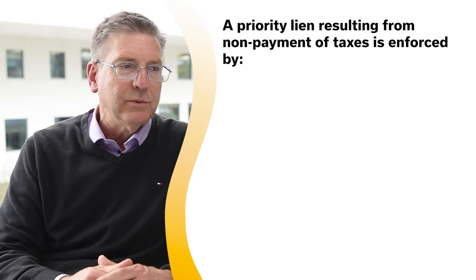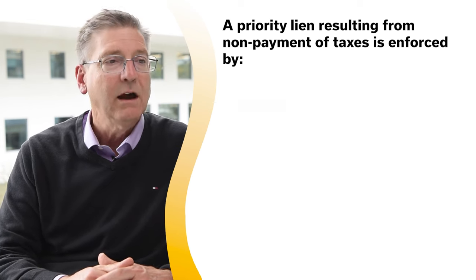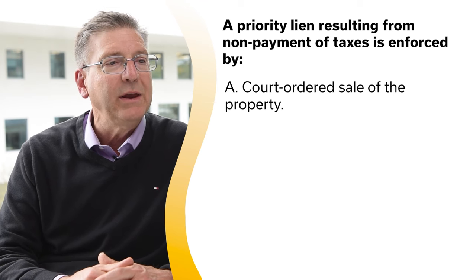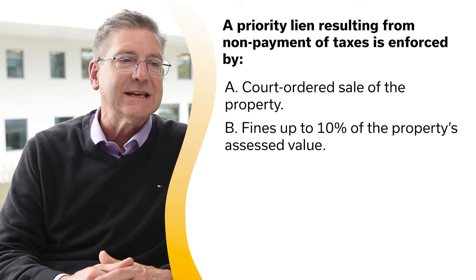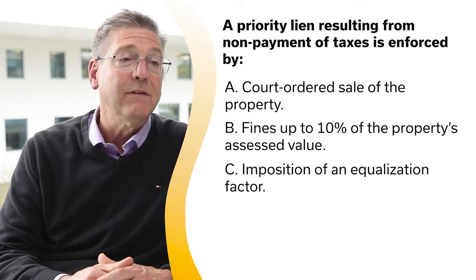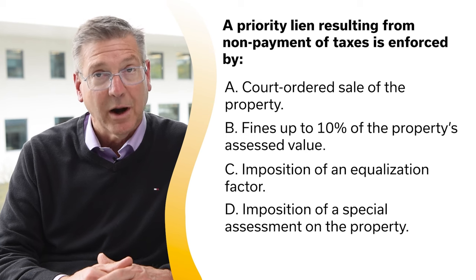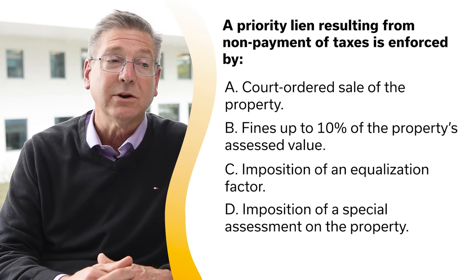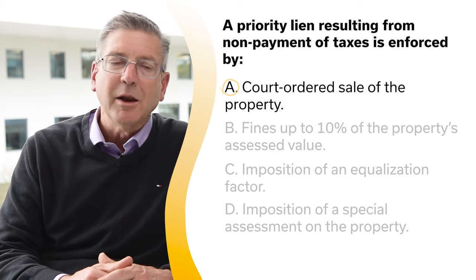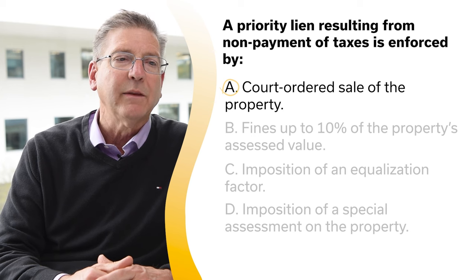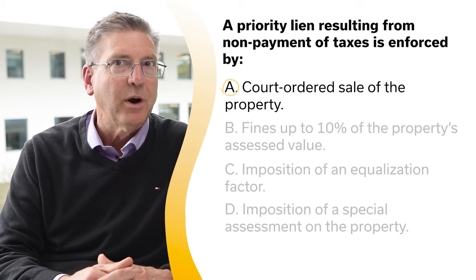A priority lien resulting from non-payment of taxes is enforced by: A, a court-ordered sale of the property; B, fines up to 10% of the property's assessed value; C, imposition of an equalization factor; or D, imposition of a special assessment on the property. The correct answer is A, a court-ordered sale of the property. Non-payment of property taxes results in a priority lien on the property enforced by a court-ordered sale of the property. So pay your property taxes.